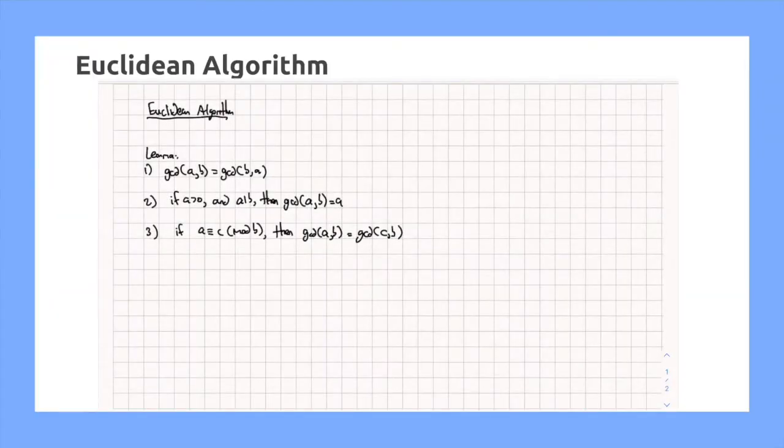Introducing the Euclidean Algorithm. The Euclidean Algorithm can be explained using a lemma consisting of three parts. The first part states that the GCD of A and B is equal to the GCD of B and A, which is relatively straightforward.